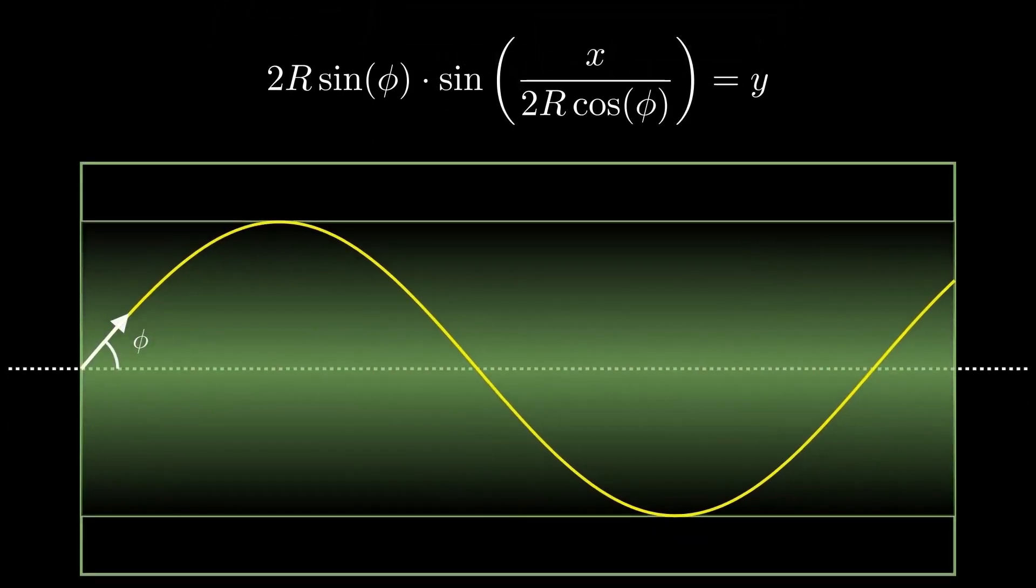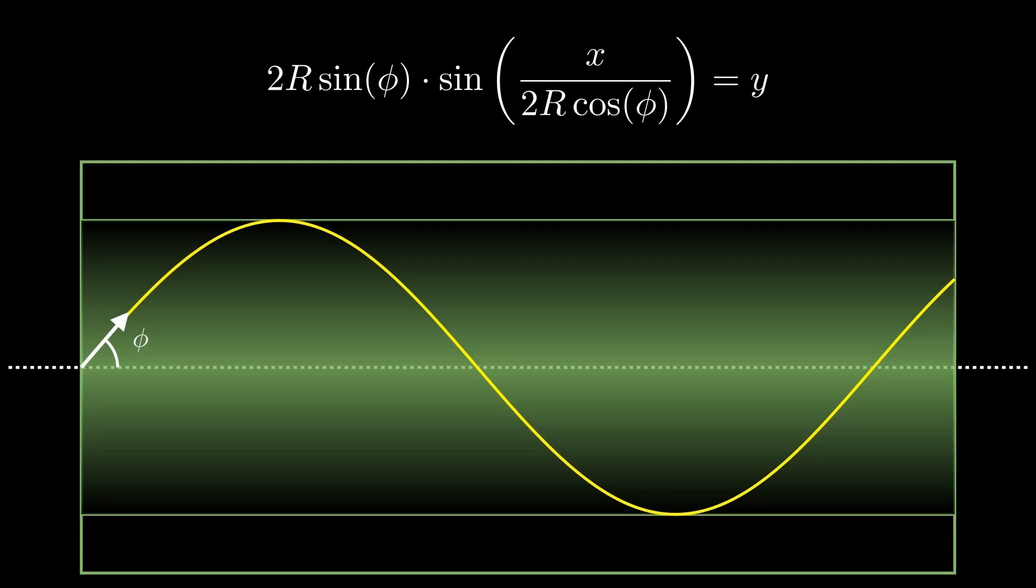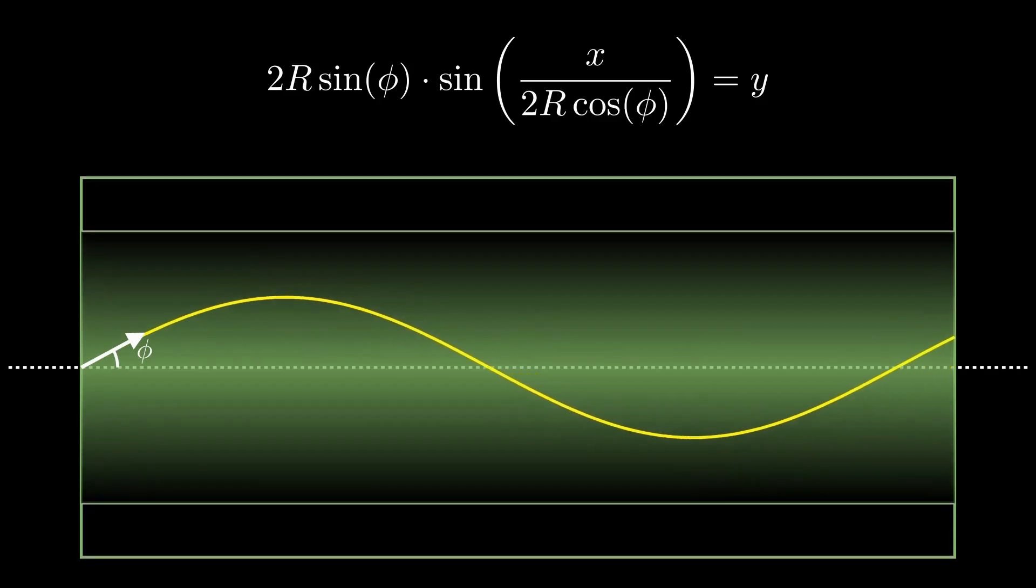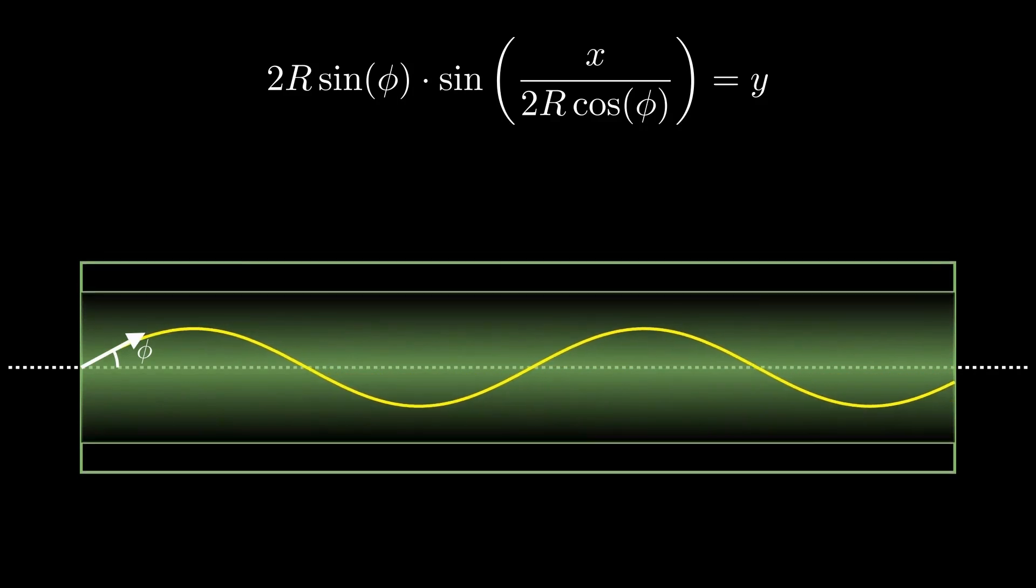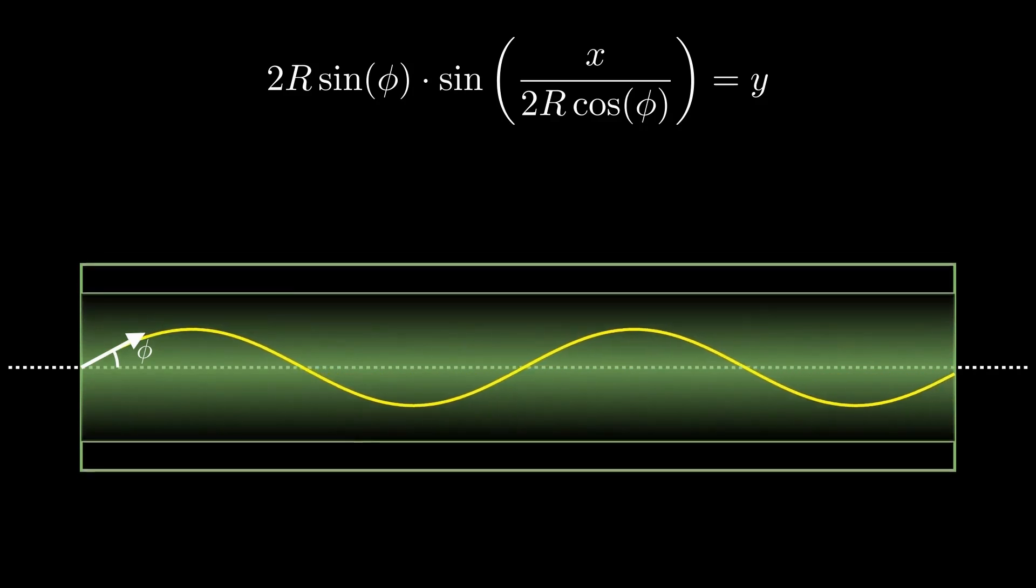And bam, here's our function graphed out. You can see how lowering phi compresses the light's path, as expected. Also, since r is located at two different parts of our function, changing r thus changes the curve's amplitude and period, which graphically results in both vertical and horizontal compressing as r is decreased.